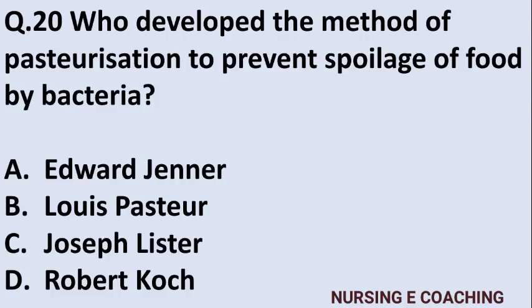Question 20: Who developed the method of pasteurization to prevent spoilage of food by bacteria? Option A: Edward Jenner, Option B: Louis Pasteur, Option C: Joseph Lister, Option D: Robert Koch. Answer is B — Louis Pasteur developed the pasteurization method.